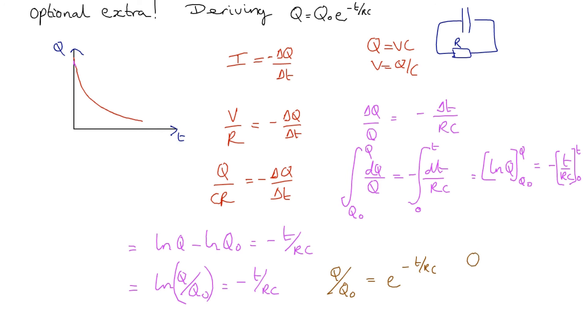Just a bit of rearrangement gives us Q = Q₀e^(-T/RC).